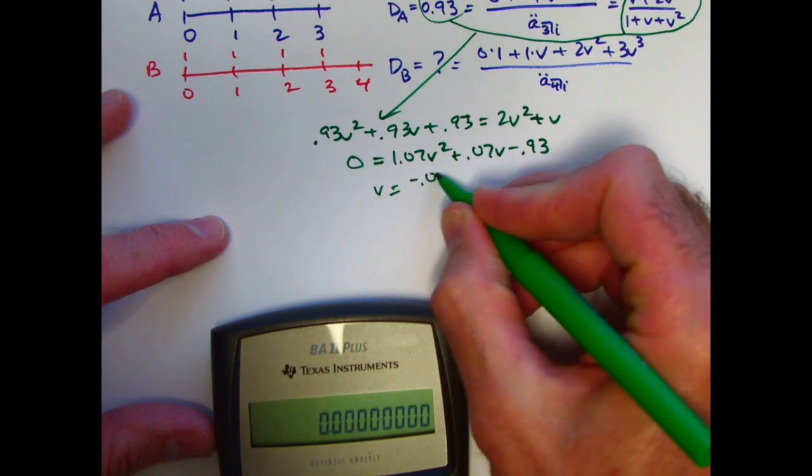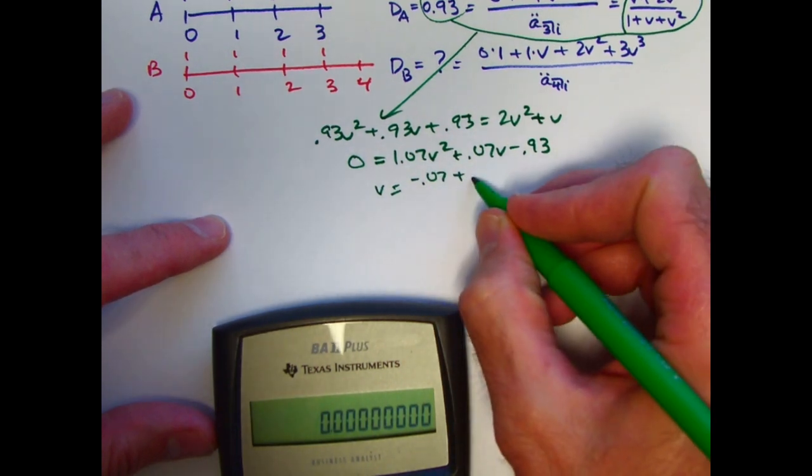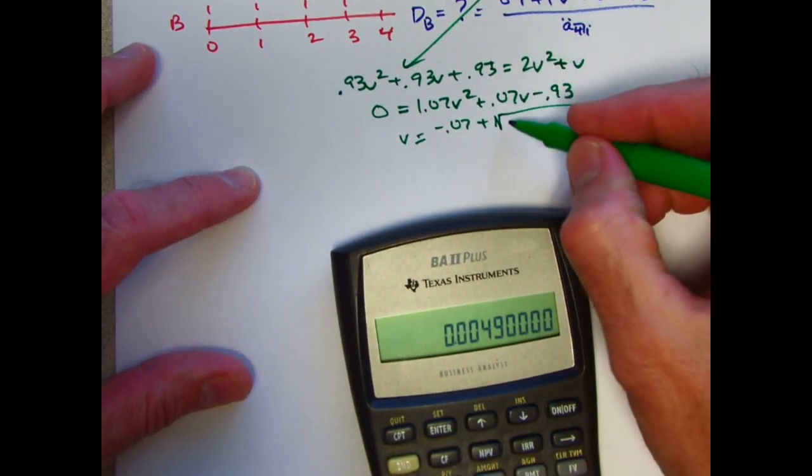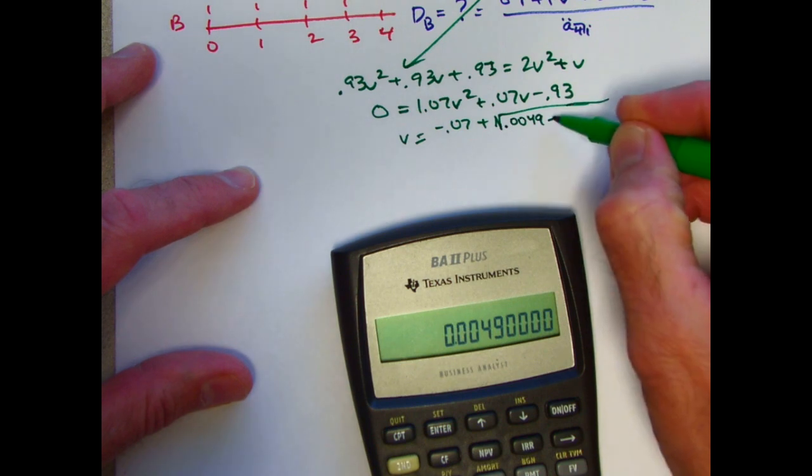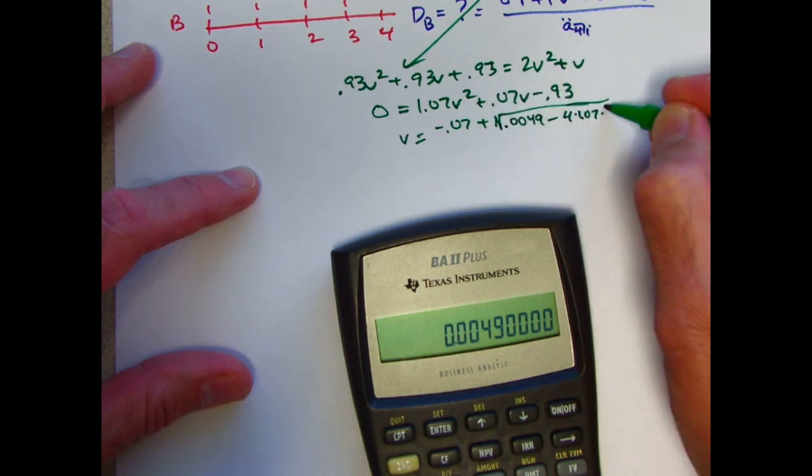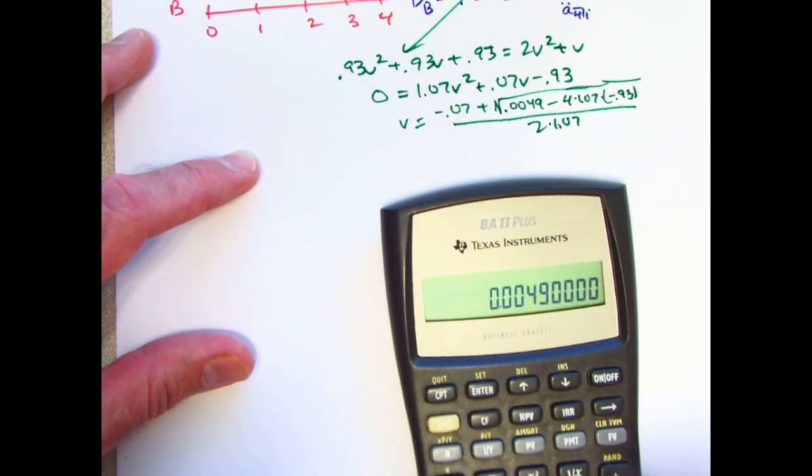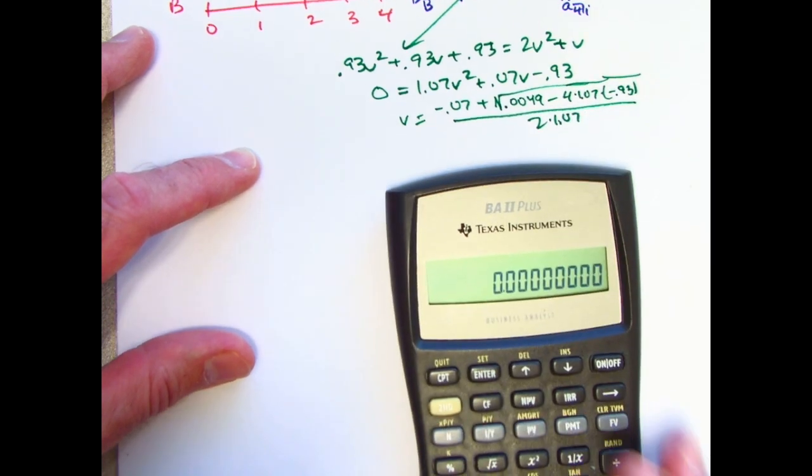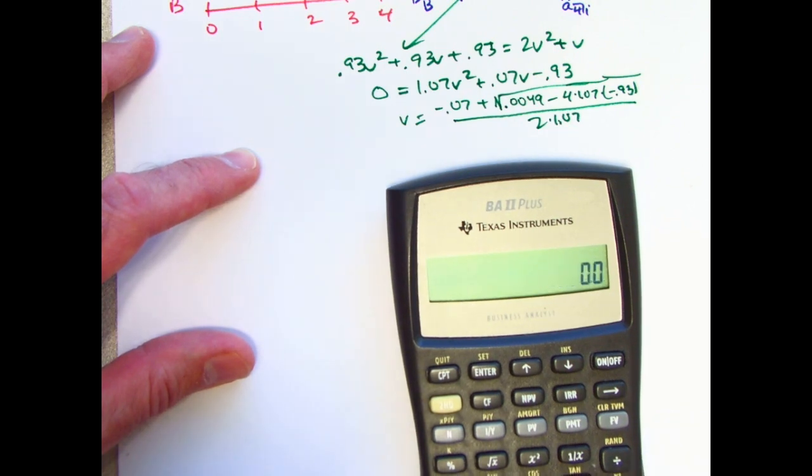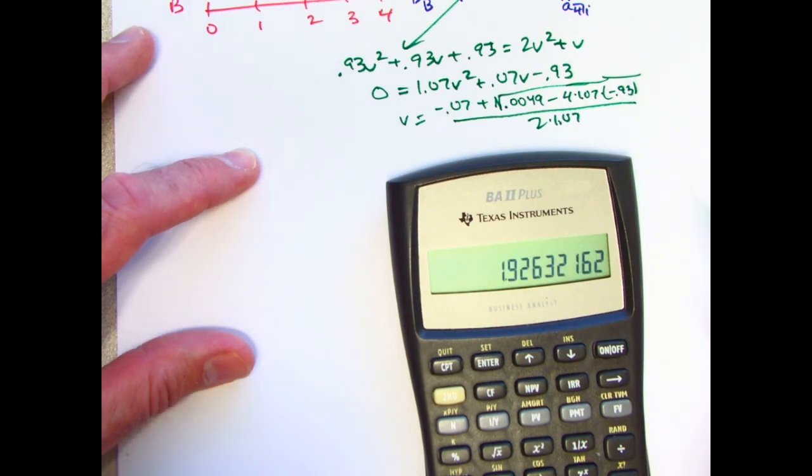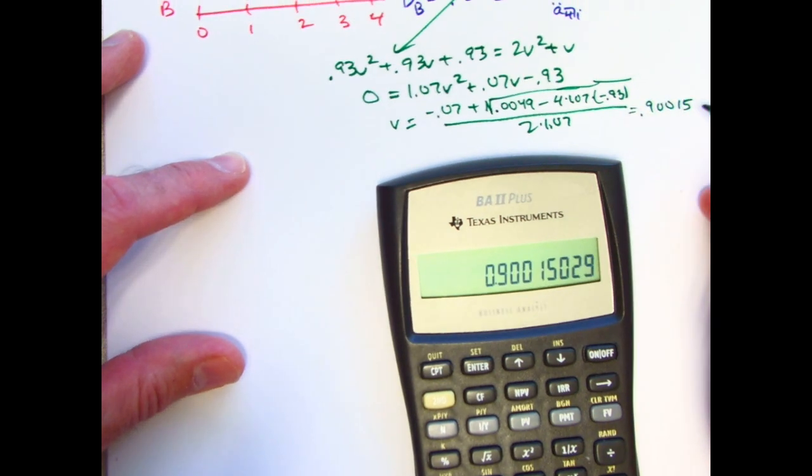Maybe you want to skip ahead instead of watching me use it. We want to have v to be negative 0.07 plus or minus, and in fact, it's just going to be the plus because we do want a positive answer here. Square root of 0.07 squared is 0.0049 minus 4 times 1.07 times negative 0.93, just using the quadratic formula, all divided by 2 times 1.07. All right, let's find this product. We're ultimately going to add here, no complex numbers. 4 times 1.07 times 0.93 gets added to 0.0049. Take the square root of this thing, subtract 0.07, and divide by 2.14. So it looks like v is 0.90015029.